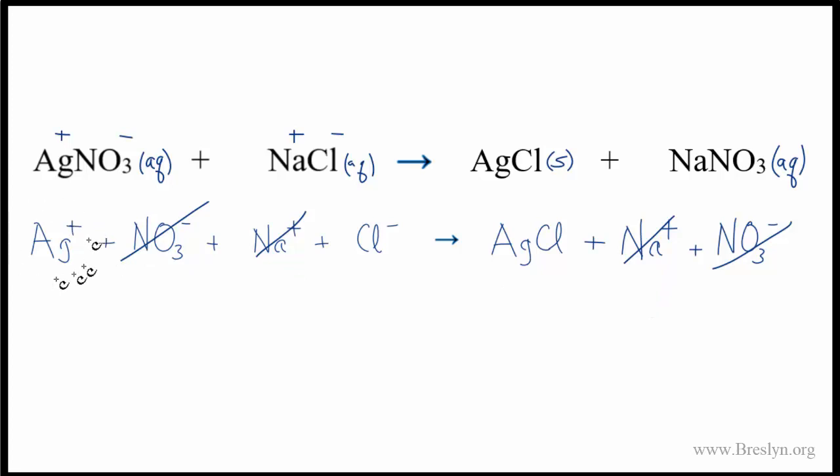What did change? The Ag+, the silver ion, and the Cl-, the chloride ion—they joined together to form a solid. That's very different. These ions in the water were dissolved and clear, and then you have this white precipitate. Based on this, we have our net ionic equation.